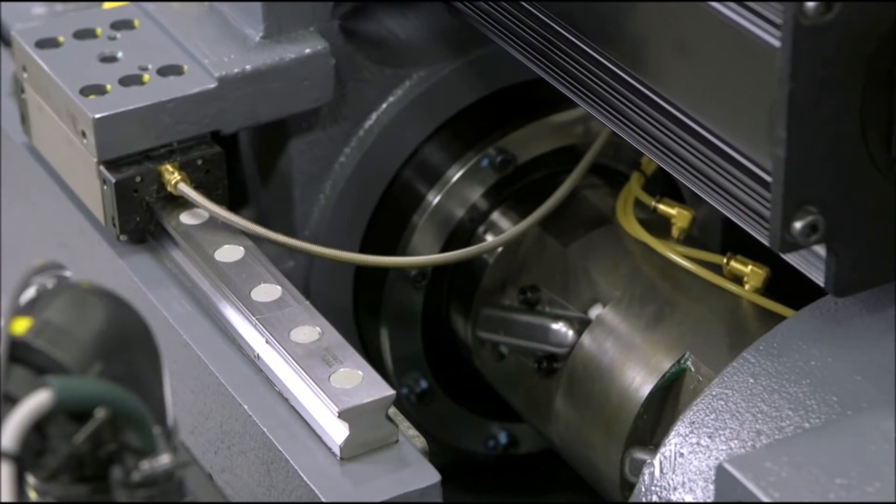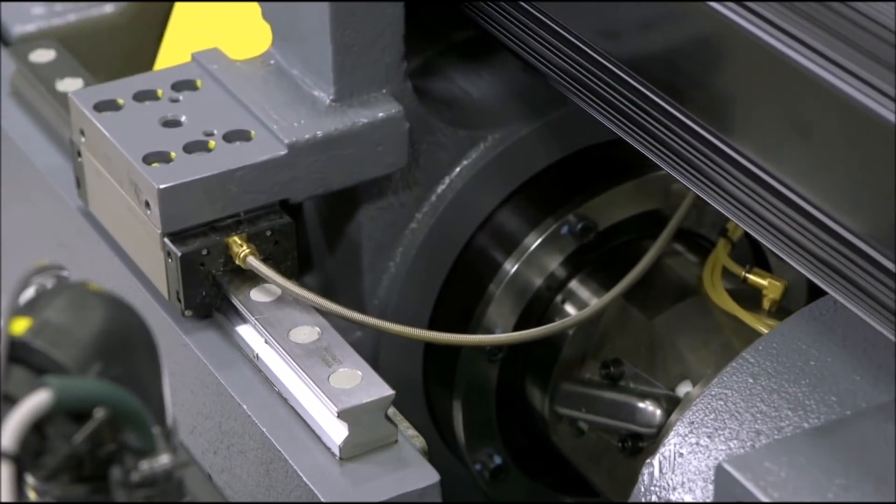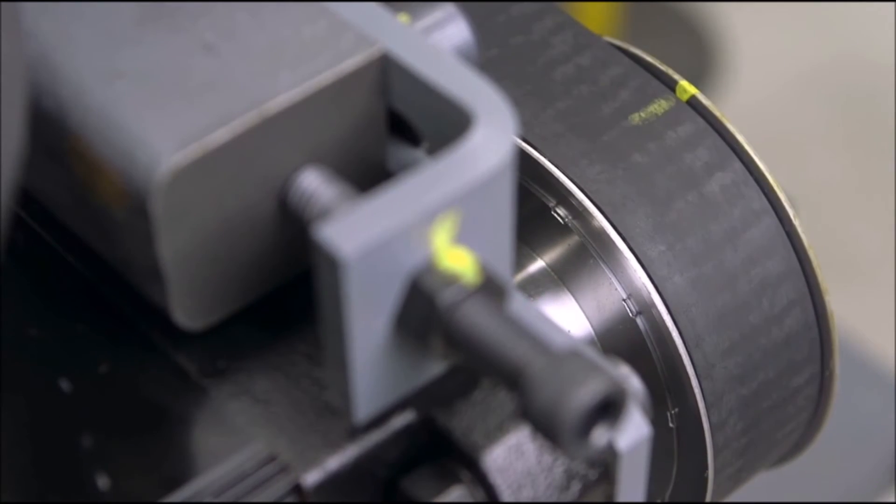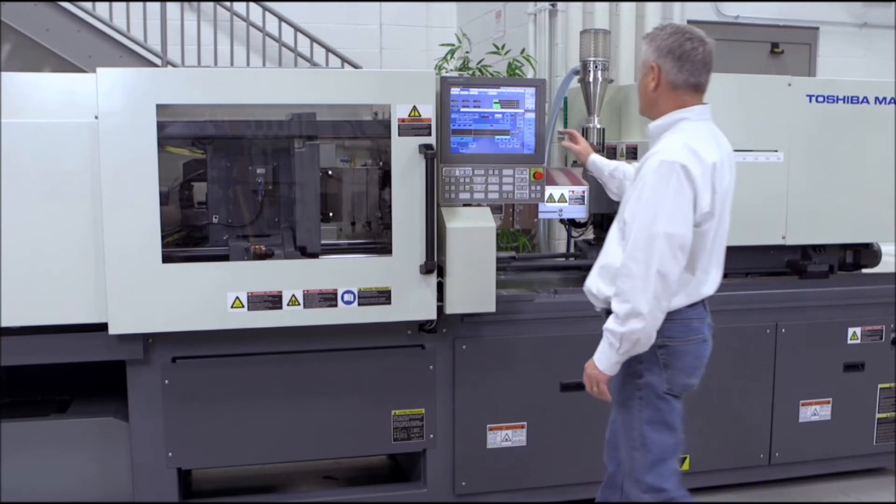With the load cell behind the screw, the melt pressure can be measured so accurately that scientific molding can be achieved using the features of the V50 controller, without the need of in-mold transducers.